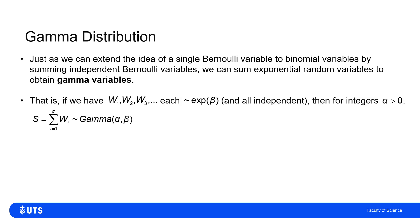So if I've got W1, W2, W3 and so on, and each of these is an independent realization of the same exponential distribution, exponential variable rate parameter beta.